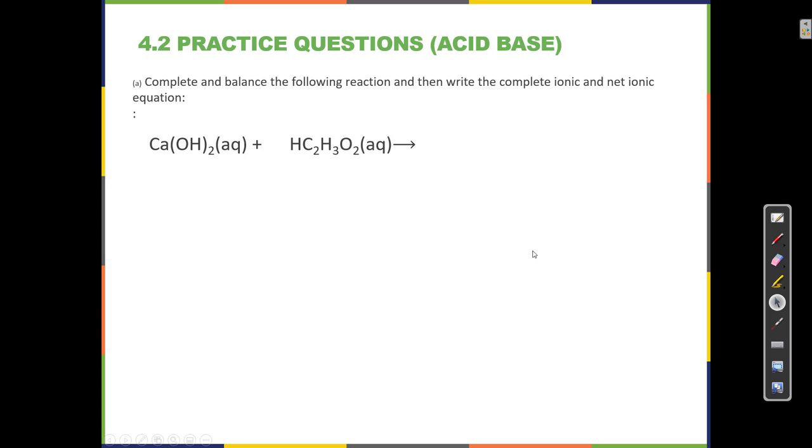Complete and balance the following reaction, and then write the complete ionic and net ionic equation. When we're trying to complete an equation, we need to determine if it's a double-displacement or single-displacement reaction. In this case, I have these two compounds, and each consists of two parts: positive and negative. Just like in a previous example, this is a double-displacement reaction, where the positive ions are going to trade places.